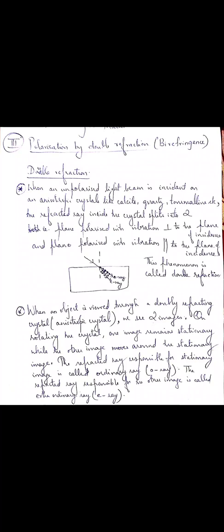Now, once again we will revise what double refraction is. When a ray of light is incident on certain doubly refracting crystals or certain anisotropic crystals like calcite, quartz, etc., the refracted ray inside the crystal splits into two. One refracted ray will be plane polarized with vibrations perpendicular to the plane of incidence, and the other refracted ray will be plane polarized with vibrations parallel to the plane of incidence. This phenomenon is called double refraction.